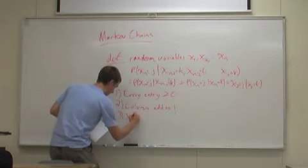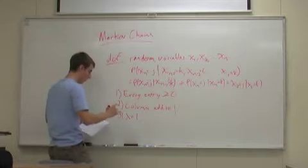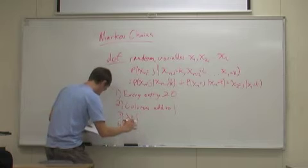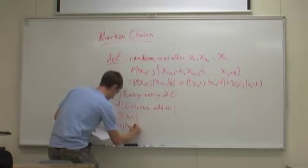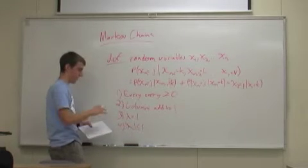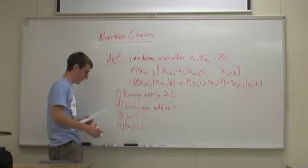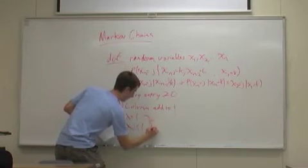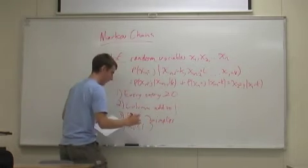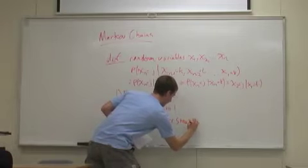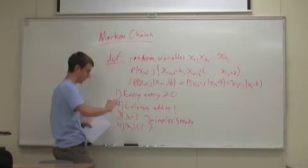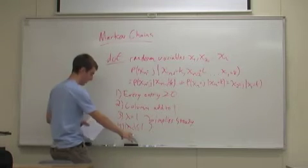Also, all Markov chains have an eigenvalue of one, and all other eigenvalues of the Markov chain must have absolute value less than or equal to one. These two properties imply what's called a steady state — basically, after enough iterations of the Markov chain, you're going to end up with the same probability every time.